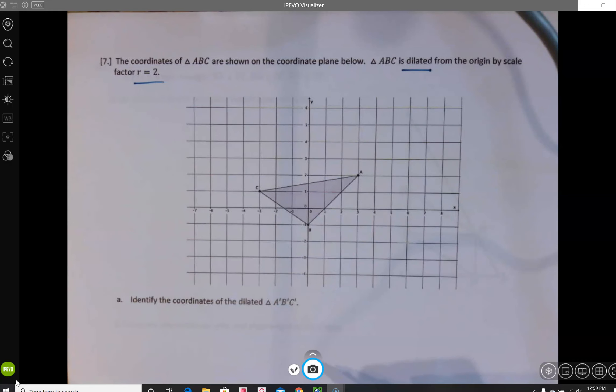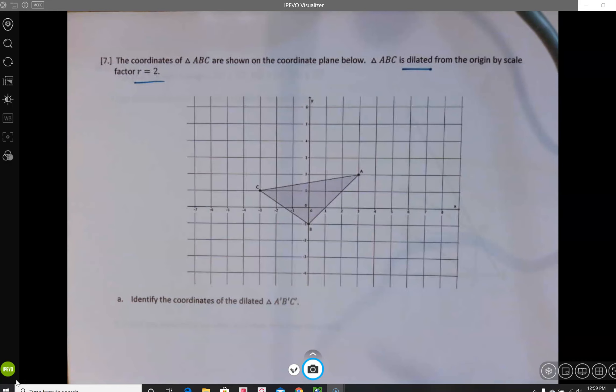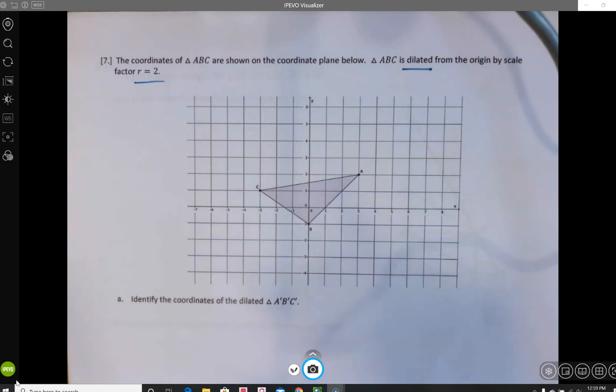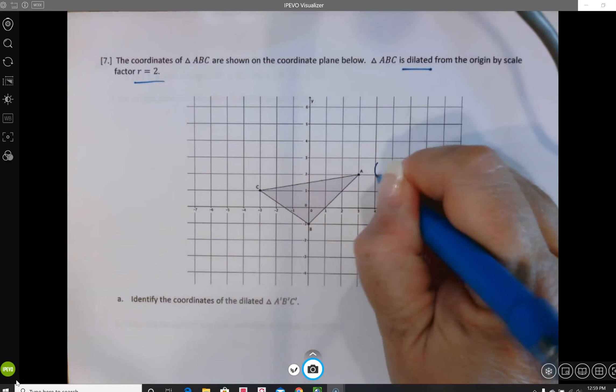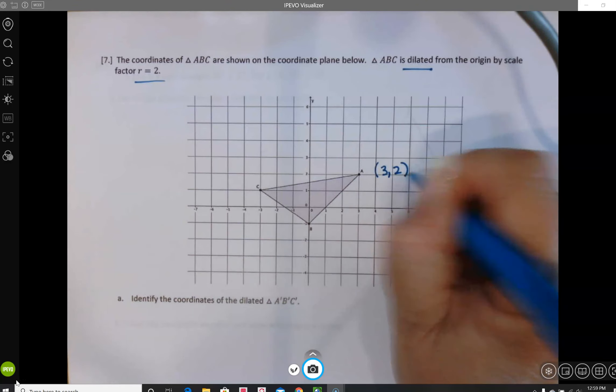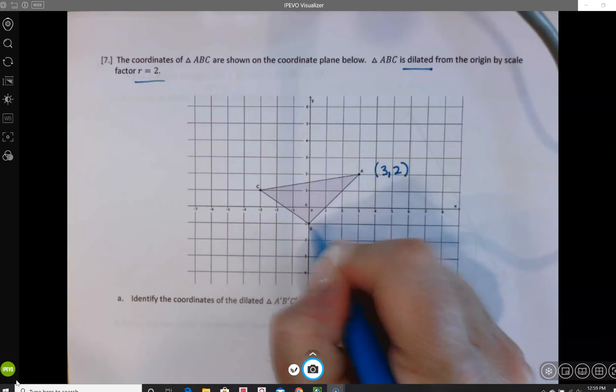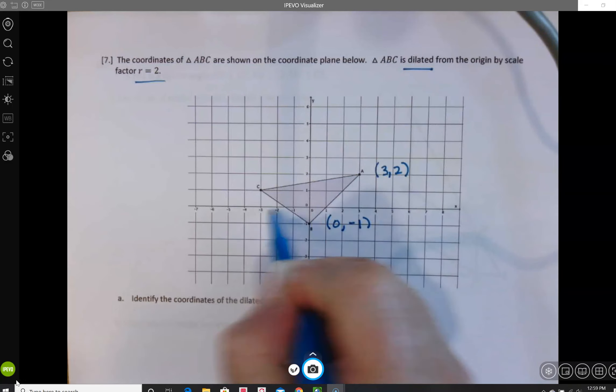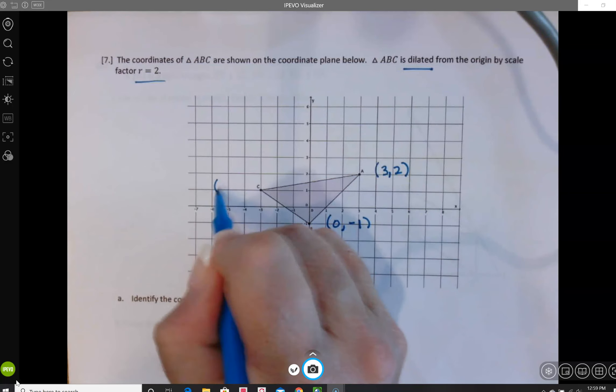It's quite simple to do a dilation. The one thing we really need is the coordinates of points A, B, and C. So A is located at 3 comma 2, B is at 0 comma negative 1, and C is at negative 3 comma 1.